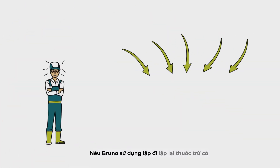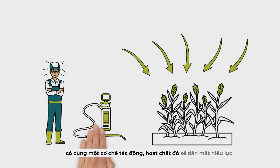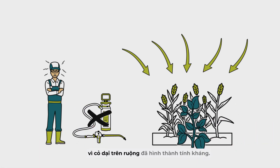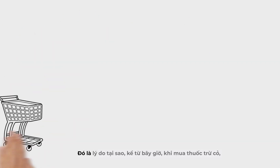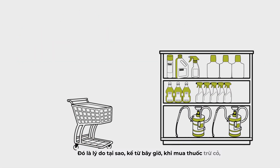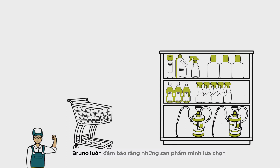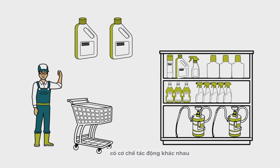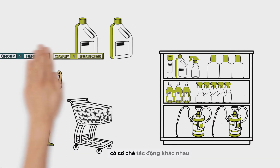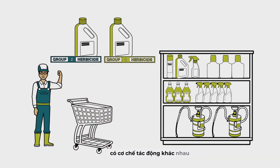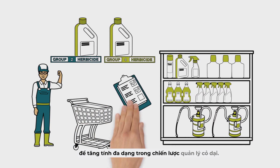If Bruno were to use the same mode of action every time, he would find that his herbicides lose their efficacy because his weeds have developed resistance. That is why, when Bruno shops for herbicides, he now makes sure he chooses products with different mode of action numerical codes to increase herbicide diversity in his weed management strategy.